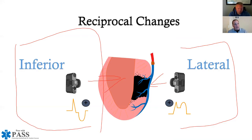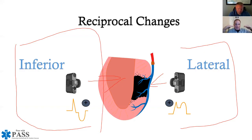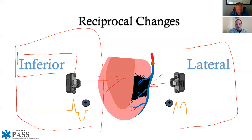To summarize reciprocal changes: inferior leads on one side and primarily lateral leads on the other side of the teeter-totter. We primarily see reciprocal changes between inferior and lateral leads because of the angles from which those lead groups view the left ventricle.